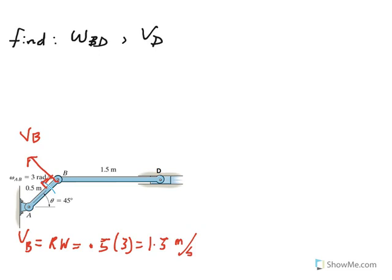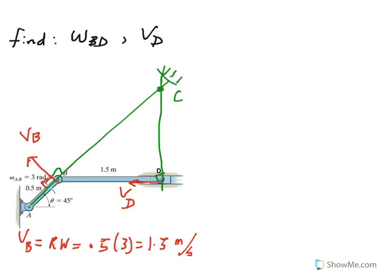We also know that D has no choice but to move horizontally to the left at this instant, because it's confined to move within that cylinder. So if we have the velocity of two points, all we have to do is draw perpendicular lines to the two velocities at those two points. Perpendicular to velocity of B is the extension of link AB at 45 degrees, and perpendicular to velocity of D is vertical — 90 degrees. The point of intersection becomes the instantaneous center.